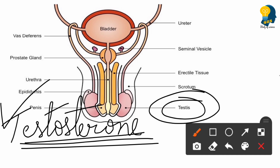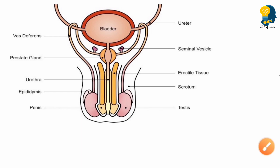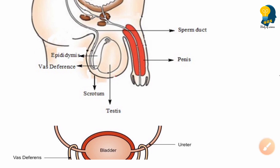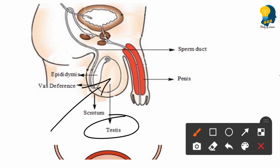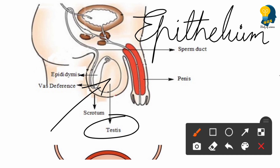Testosterone helps in the development of secondary sexual characters. Examples of secondary sexual characters include growth of facial hair, enlargement of the testes, and broadening of the chest region. Now, what is inside the testes that allows it to produce sperms?